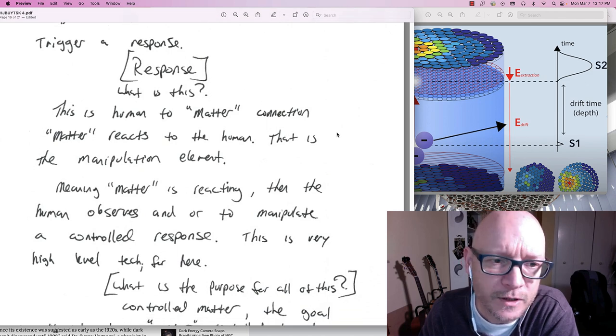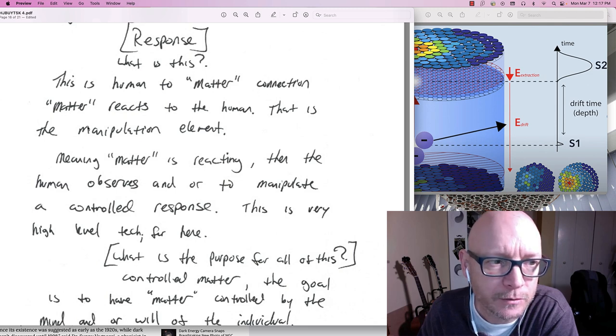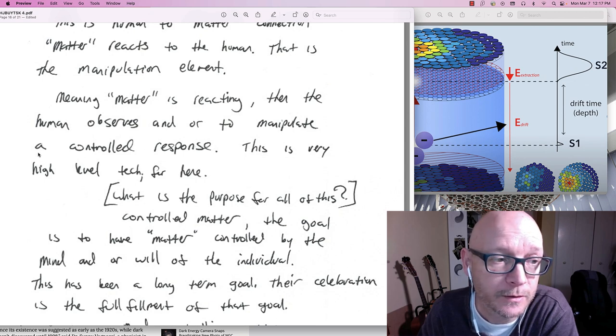This is human to matter connection. Matter reacts to the human. That is the manipulation element. Meaning. Matter is reacting. Then the human observes. And or to manipulate a controlled. Is very high level tech. For here.